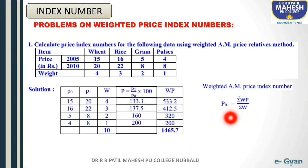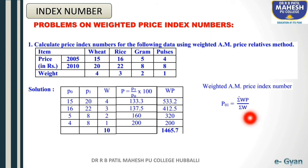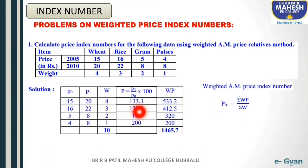After multiplying W into P, take the summation of WP. Weights are already given; summation W is 10. The price relative formula is: current year price divided by base year price, into 100, i.e., P1 divided by P0 into 100. So: 20 divided by 15 into 100 is 133.3; 22 divided by 16 into 100 is 137.5; 8 divided by 5 into 100 is 160; 8 divided by 4 into 100 is 200. These are the price relatives.